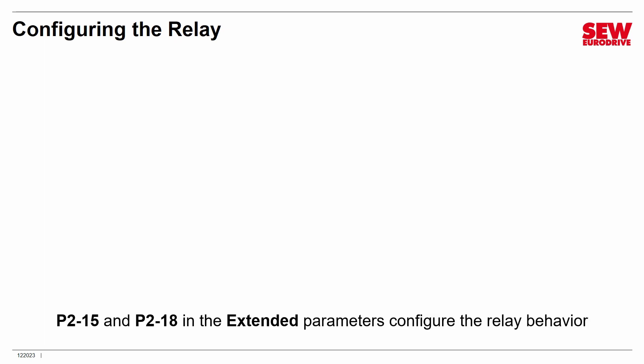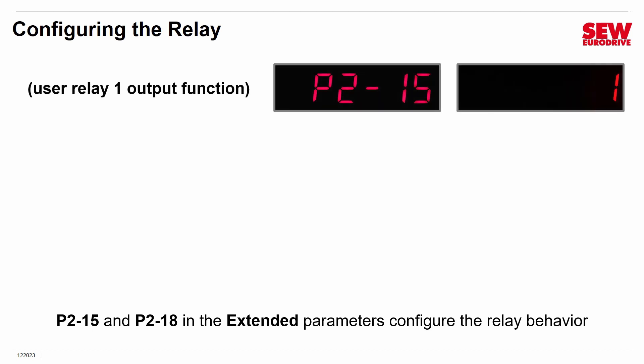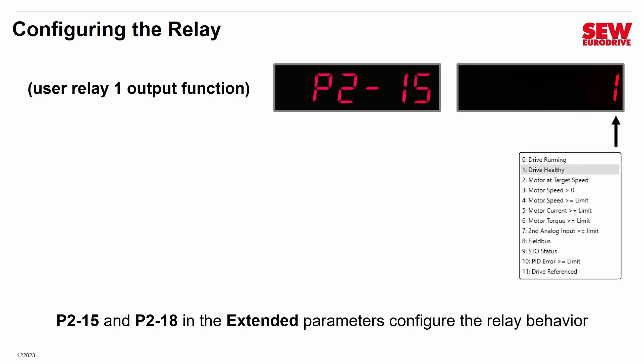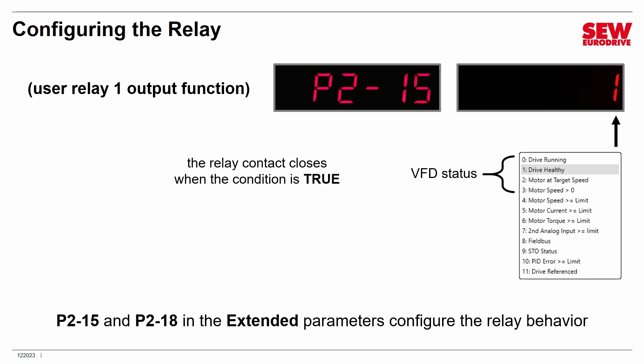Parameters 2-15 and 2-18 in the extended parameters configure the relay behavior. Parameter 2-15 is for relay 1 and 2-18 is for relay 2, but they are identical in what you do with them. The default is option 1, which is drive healthy. The top four options indicate VFD status, which is very useful when communicating back to a controller. The relay contact closes when the condition is true.